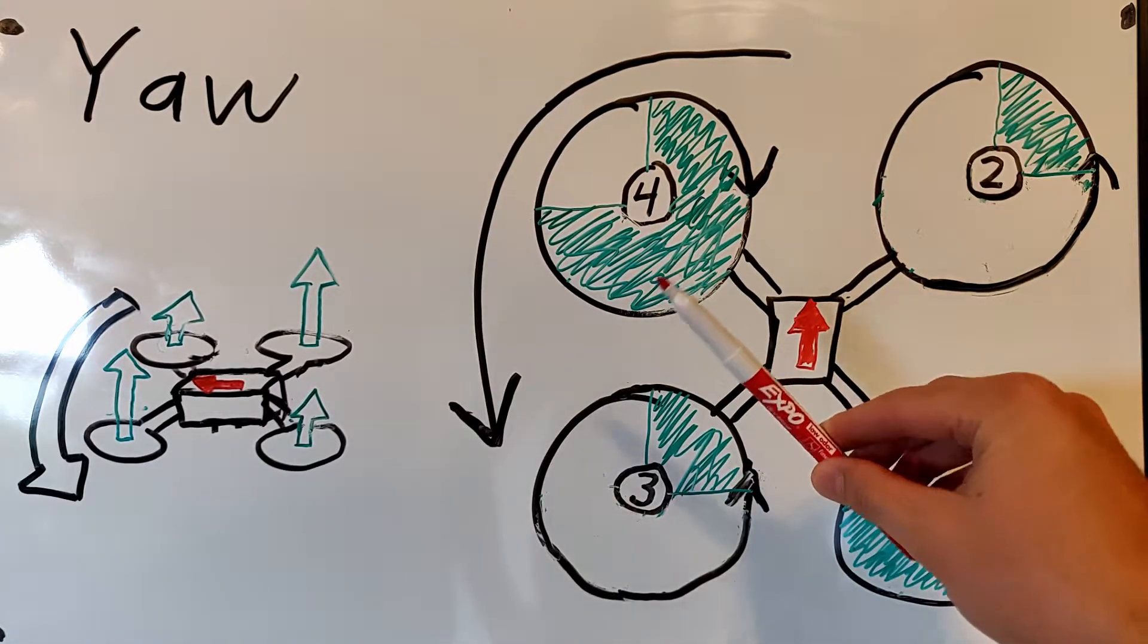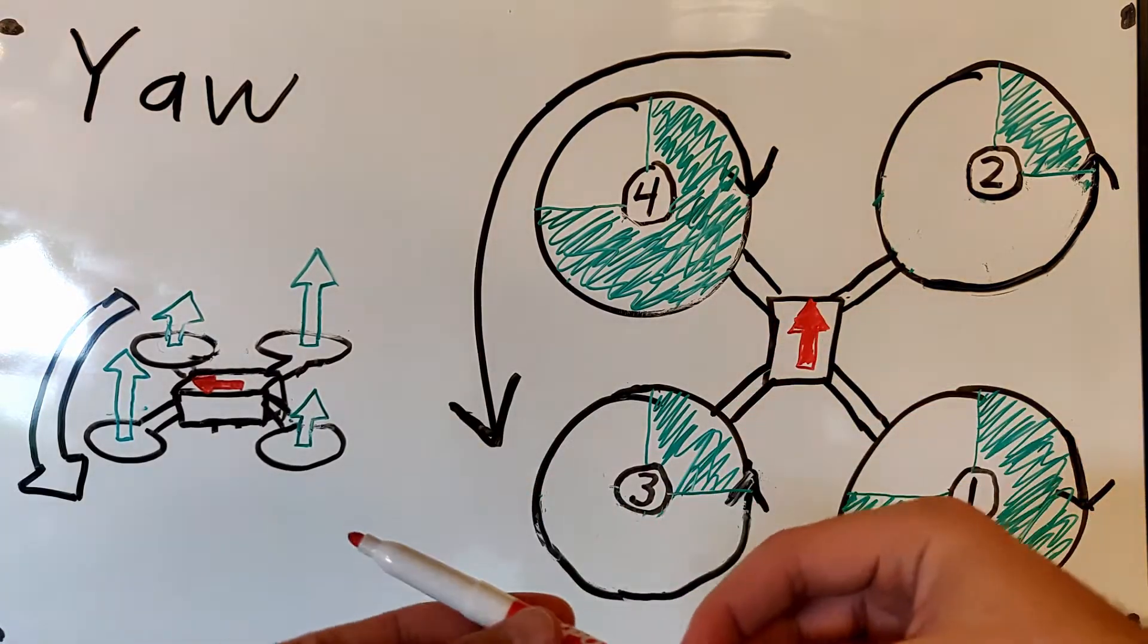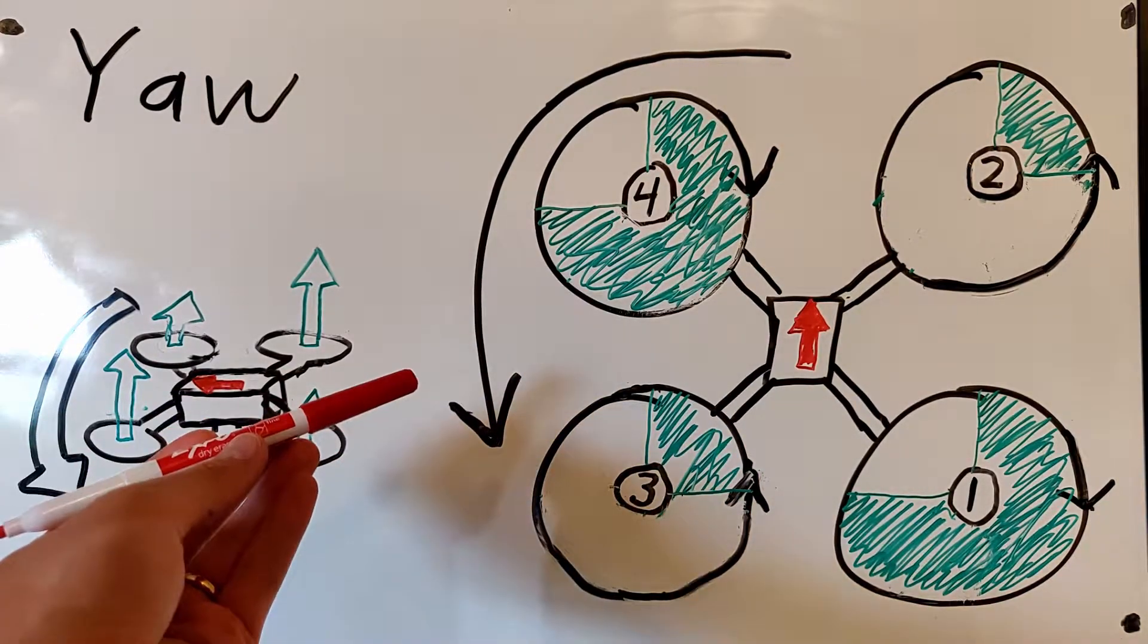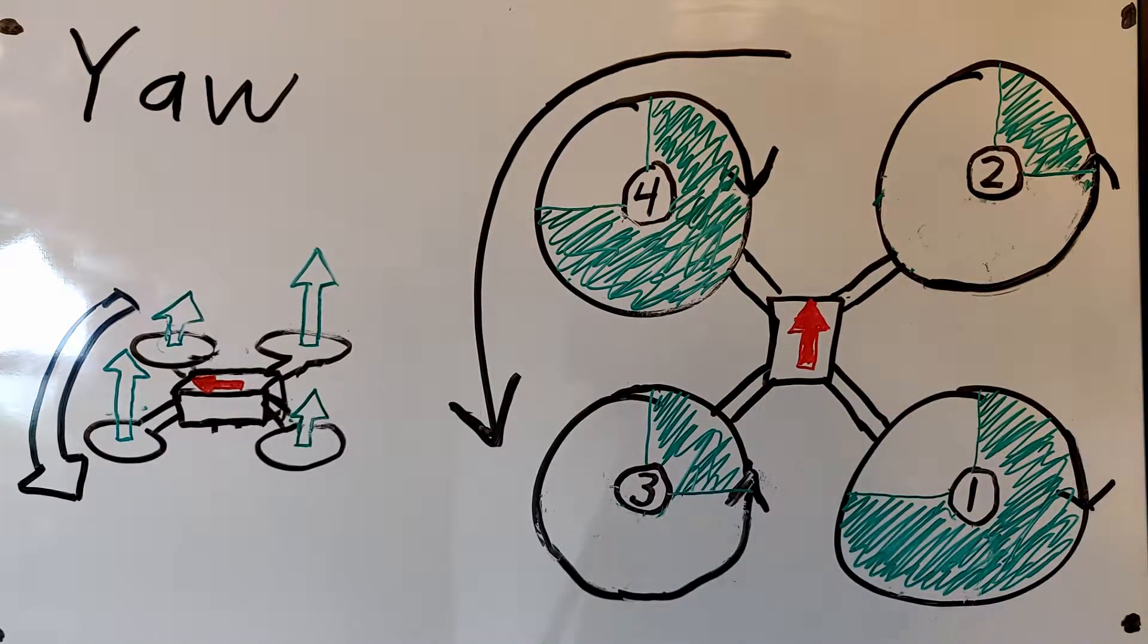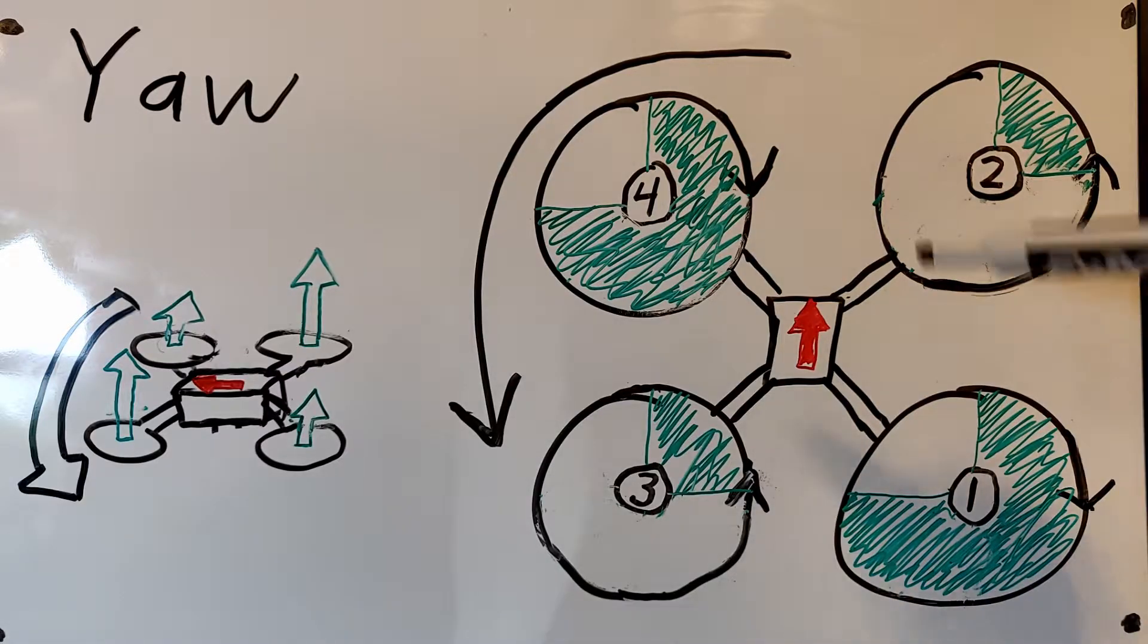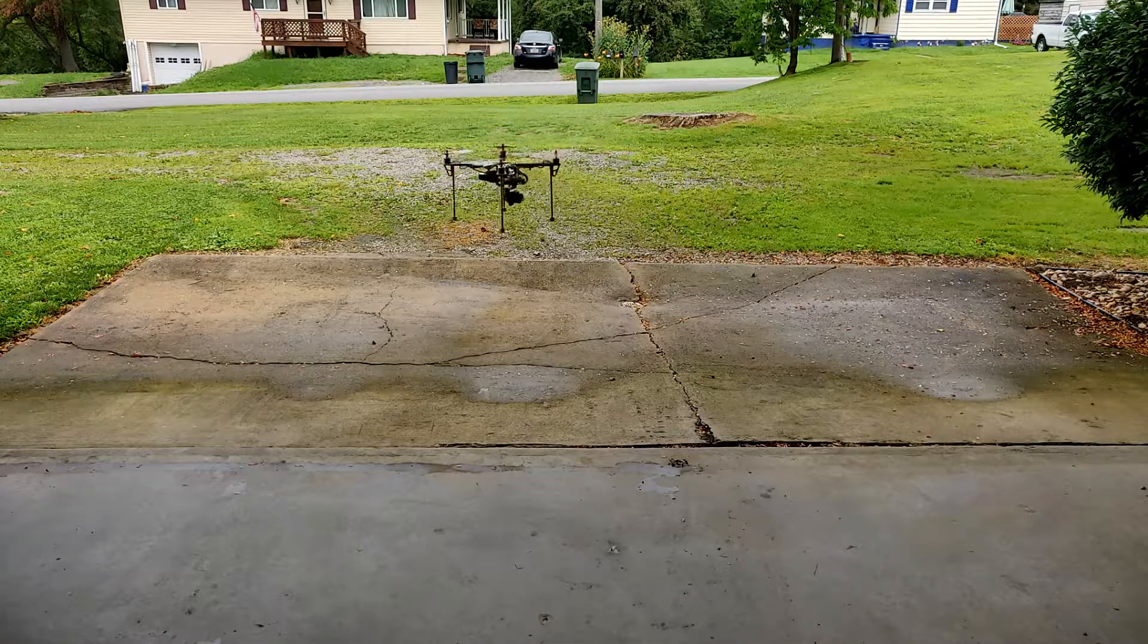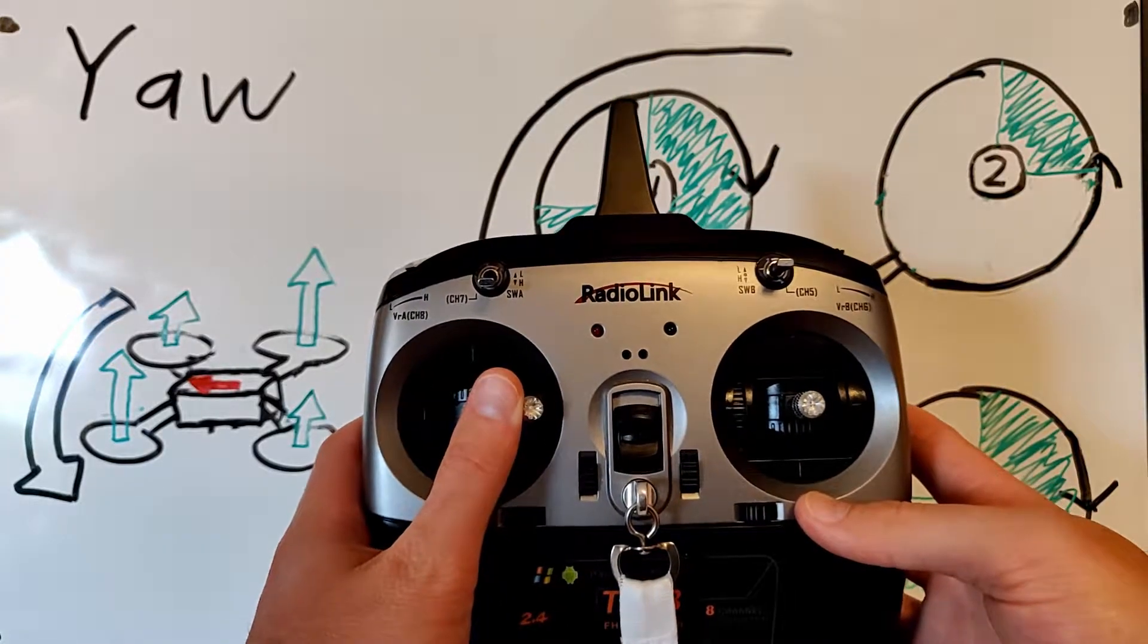Yaw means to change the direction at the front of the craft is facing. So you could yaw left or yaw right. In this example we're going to be yawing to the left. The two counterclockwise motors are spinning slower than the clockwise motors. This creates an imbalance in torque and if you remember from Newton's third law if these ones have more torque and they're spinning this way then that means the body is going to want to try to rotate the opposite way and this will cause the body to yaw to the left. To yaw to the left push the left stick to the left. To yaw right push the left stick to the right.